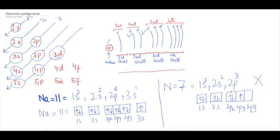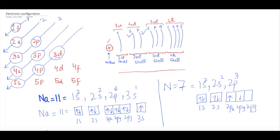Can we put two electrons in 2px and one remaining electron in 2py? No, this is wrong. The correct method is: when you have degenerate orbitals — those orbitals which have the same energy and same distance from the nucleus — electrons remain unpaired with the same spin. So one electron in 2px, one in 2py, and one in 2pz. The name of this rule is Hund's rule.